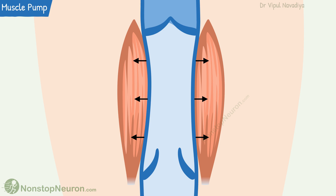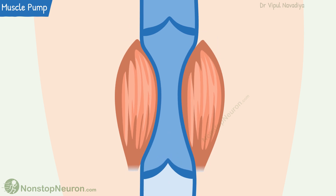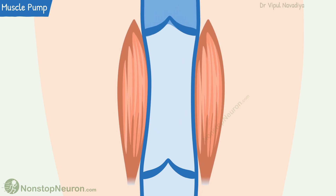On the other hand, the valve on the lower side opens, and the vacuum in the middle segment sucks the blood from the lower segment. So there is a net flow of blood from the lower segment to the middle segment. With the next contraction, the cycle is repeated — the upper valve opens and the blood is pushed into the upper segment, and with the relaxation of muscle, the lower valve opens and blood is sucked from the lower segment.